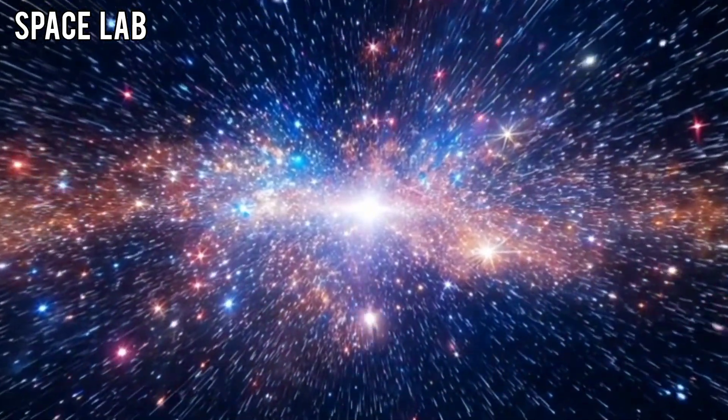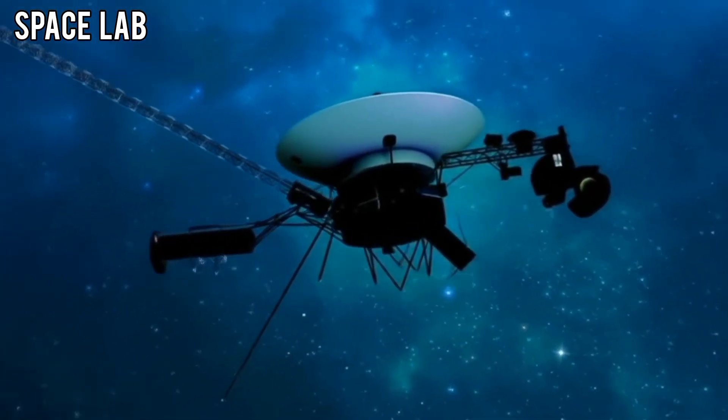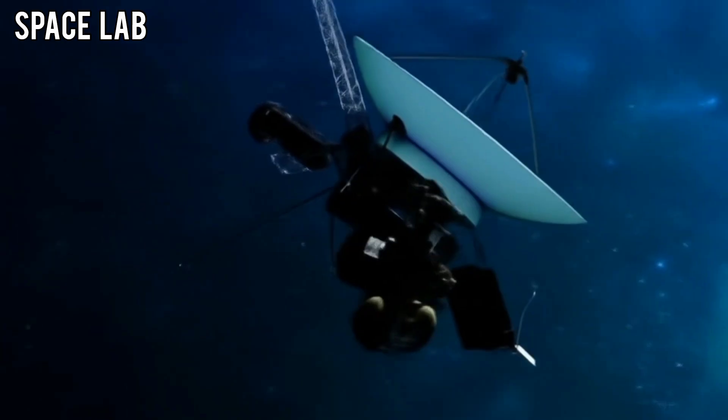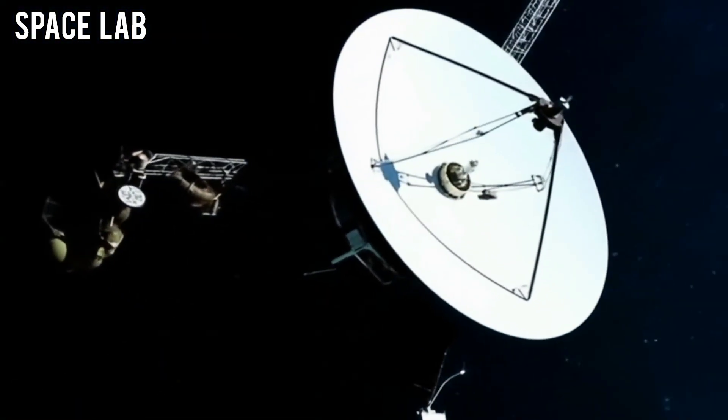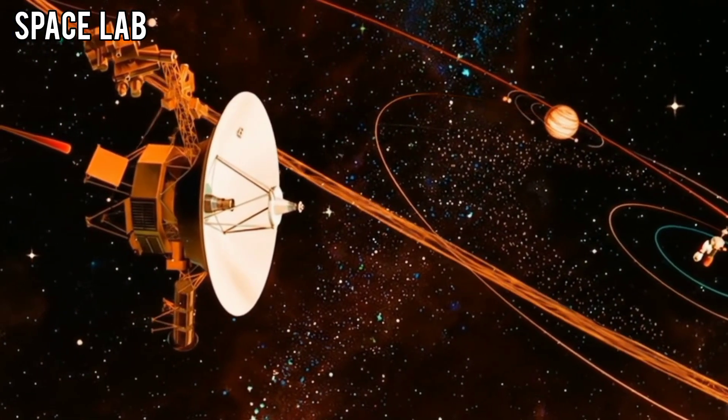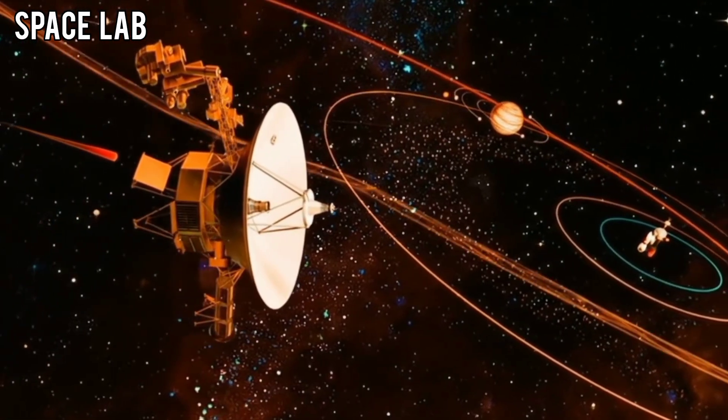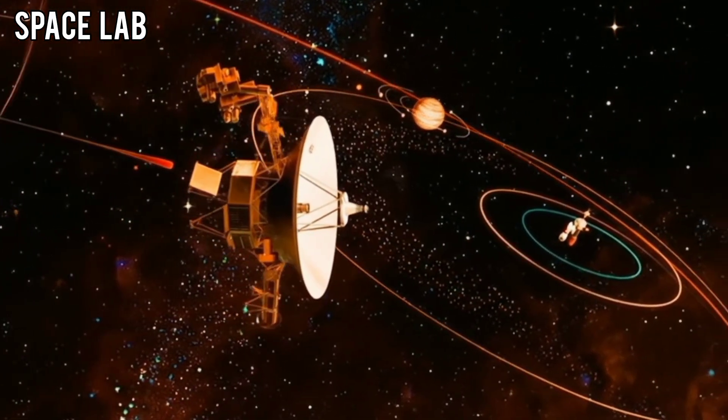At first, some suspected it was a technical glitch. After all, Voyager 1 is old, with systems far beyond their intended lifespan. But after weeks of careful analysis, it became clear. This wasn't a malfunction. The patterns were real and external.